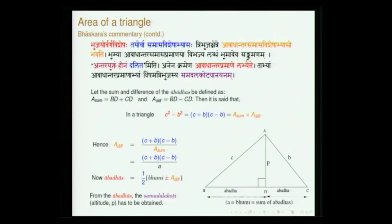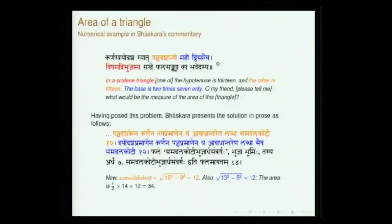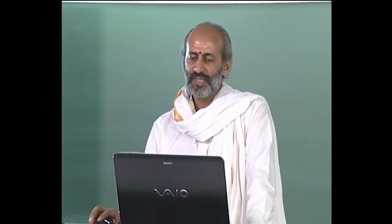Bhaskara cites the verse 'antarahiram' — whenever you have such a form, antara (difference) and samasa (sum) can be used to compute the unknowns. He illustrates with an example: 'karnastaryodashasyat panchadashanyo mahi dhisaptati dhisaptaiva vishamat triphujasya sakhe thalasankhya kabhavedasyah.' He presents several examples wherever he has to illustrate the use of a particular formula. The process is: given three sides, calculate the height via the abadha formula, then compute the area.